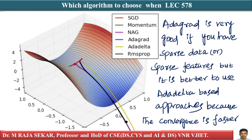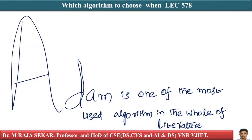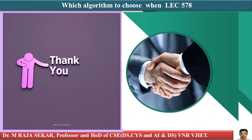Adam is one of the most favorite and fastest algorithms as far as convergence is concerned. My favorite algorithm has always been Adam. There are some advances to Adam, but Adam is one of the most used algorithms in the whole literature. I walked you through all of these algorithms so you understand and appreciate the value of Adam — why we came to the concept of Adam. Please go through this lecture, and if you have any difficulty, leave a comment. Thank you very much.